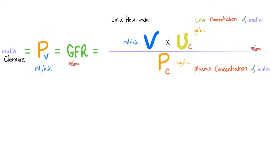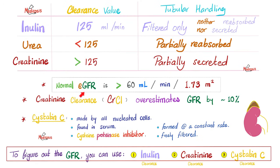Here's the equation once again. How do I estimate the GFR? You can use inulin, creatinine, or cystatin C. Which is the most accurate? Inulin. Which is the easiest? Creatinine clearance, because creatinine is already made by your body — no need to inject anything. The problem is that it overestimates GFR by about 10%, but we can program our computers to account for that.